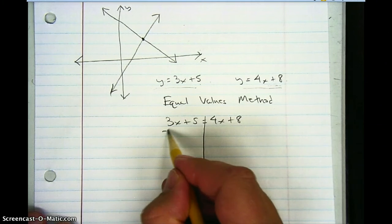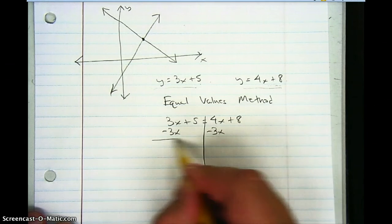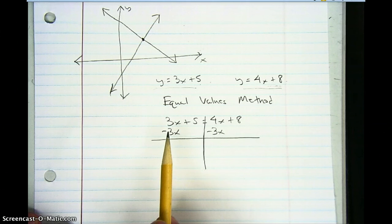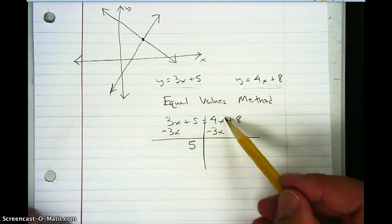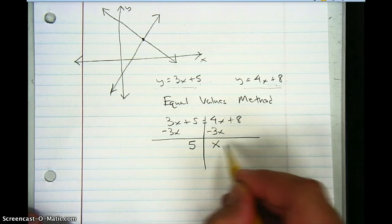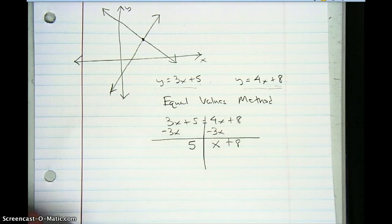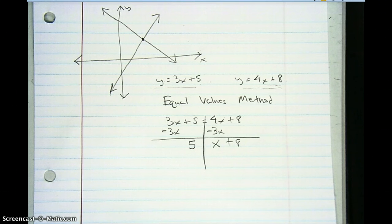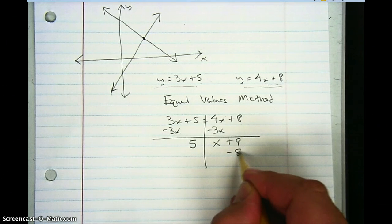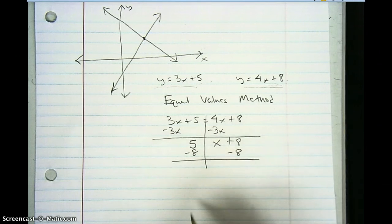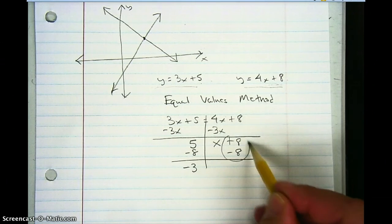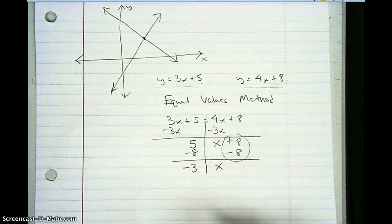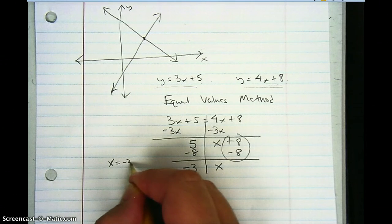I subtract 3x from both sides. On the left, positive 3x and negative 3x make 0, so I'm just left with 5. On the right, 4x minus 3x gives just x, and I still have the 8. Now I subtract 8 from both sides: 5 minus 8 is negative 3, and the 8's cancel, leaving x. So x is equal to negative 3.